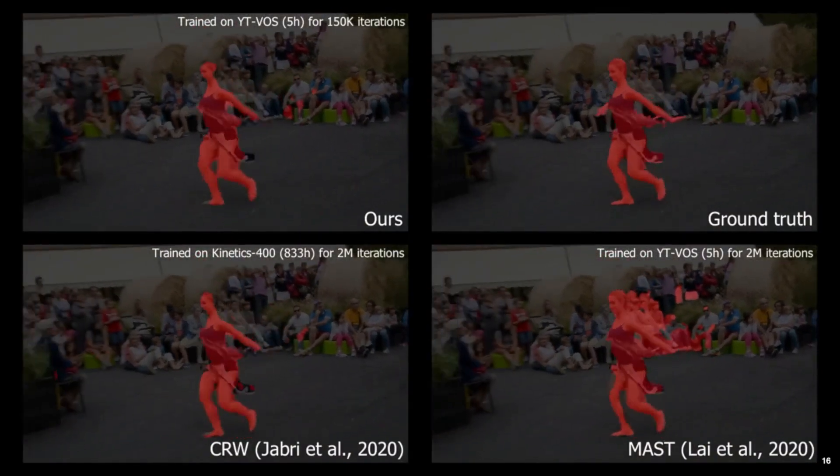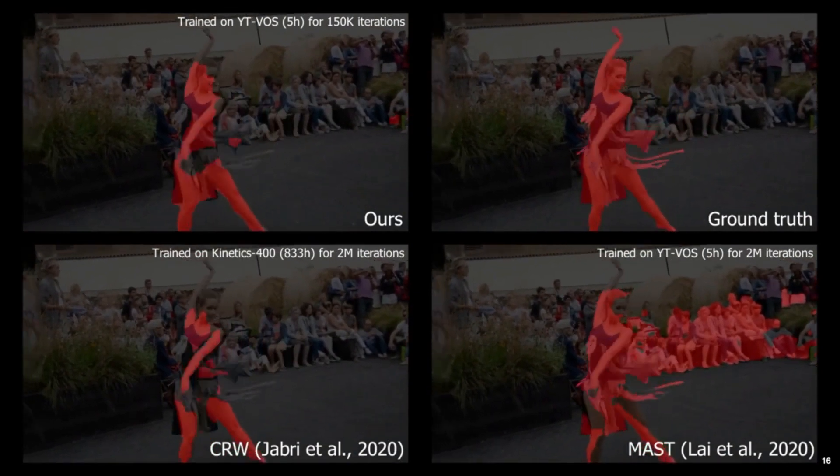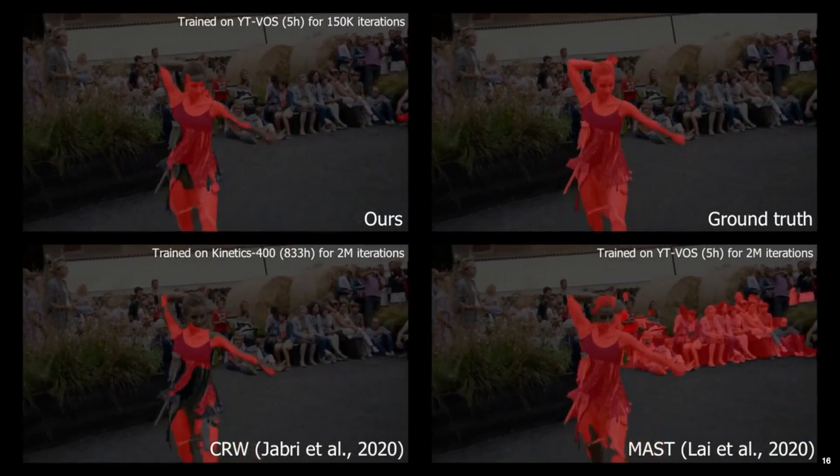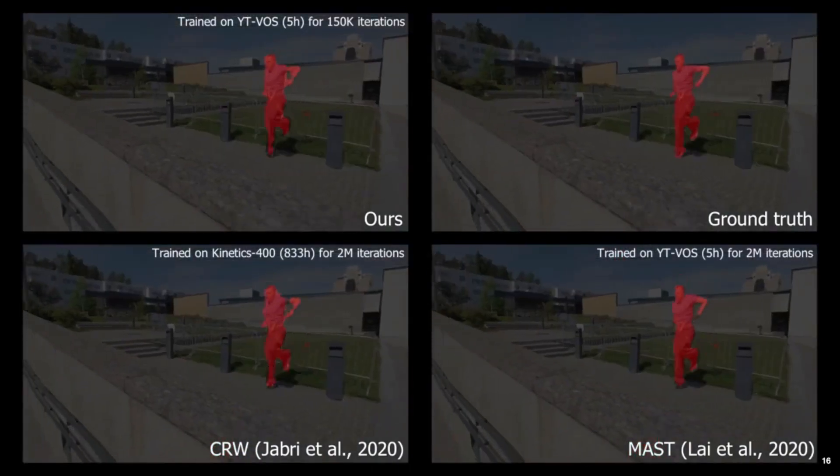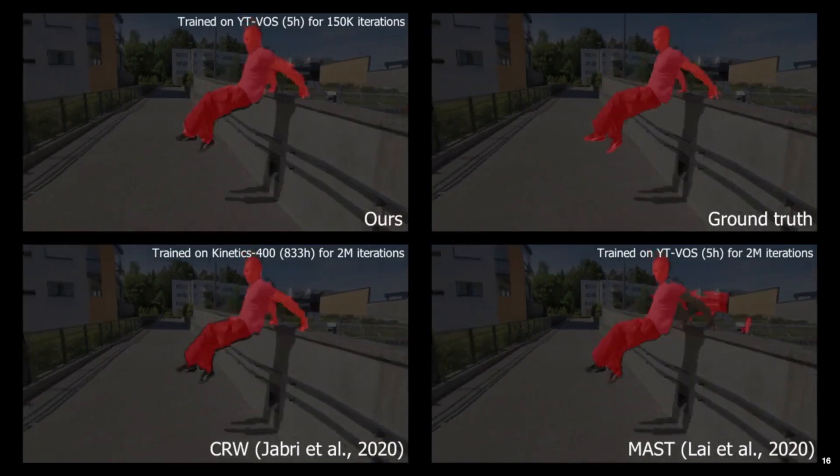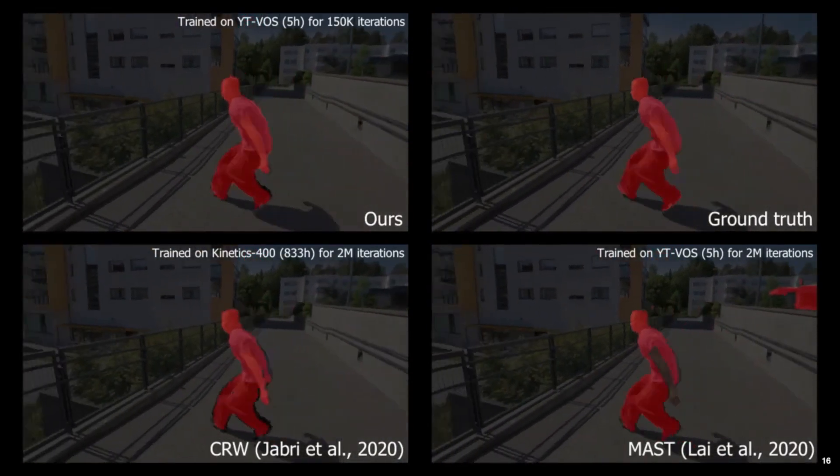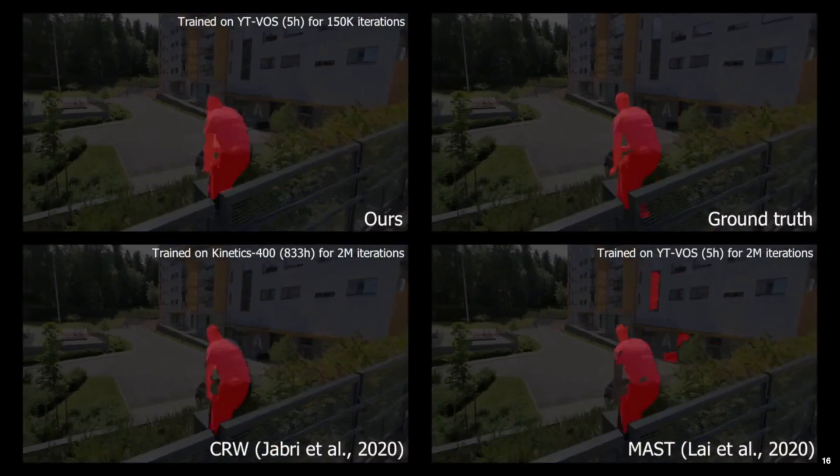Our learned feature representation is also robust to large motion and drastic background changes. This is despite the fact that our method here was trained on a much smaller dataset and required significantly fewer training iterations. In detail, our approach exhibits improved training efficiency compared to previous work.